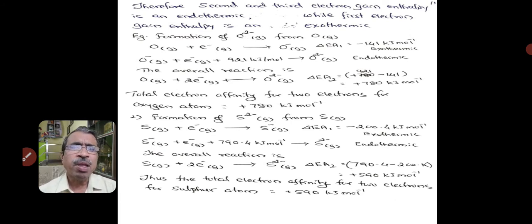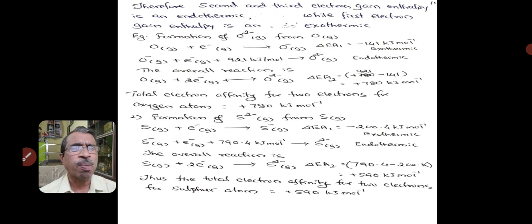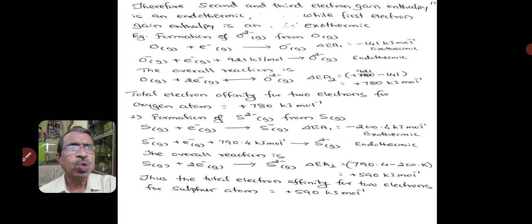Coming to another example — the formation of a sulfide ion in gaseous state from a gaseous sulfur atom. In this reaction, the electron gain enthalpy of the first step is −200.4 kilojoules per mol and for the second reaction is +790.4 kilojoules per mol. The overall reaction becomes +590 kilojoules per mol. Thus, the total electron affinity for two electrons added to a sulfur atom is +590 kilojoules per mol.